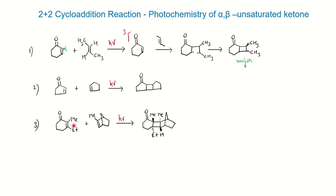For the stereochemistry: the alpha carbon bears a methyl group, so the other methyl cannot be on the same face — if this methyl is above the plane, the other methyl goes below the plane. Similarly, the methyl and ethyl groups cannot be on the same face, so if methyl is above the plane, ethyl must go below. From these you can determine the hydrogen positions and draw the full stereochemistry.